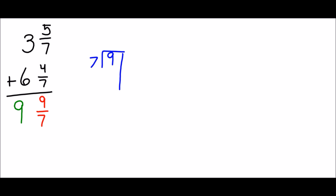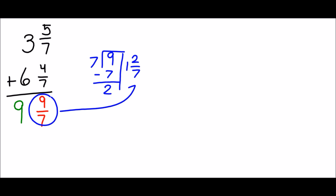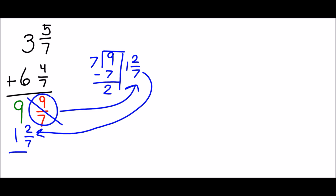We take that improper fraction nine-sevenths and regroup it by dividing. We do the division and get one, with two left over. The two is two-sevenths because we started with nine-sevenths — one represents seven-sevenths and two-sevenths remains. We get rid of the nine-sevenths, add the one to the whole number side, and keep two-sevenths on the fraction side. Nine plus one is ten, so the answer is ten and two-sevenths.